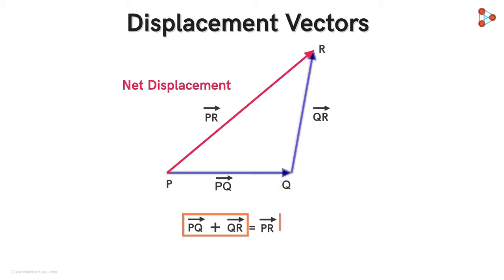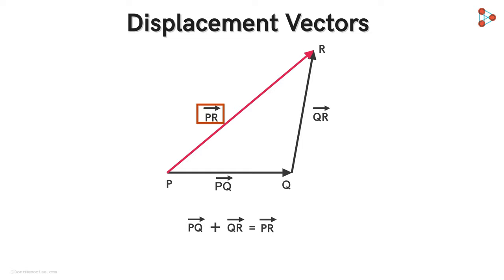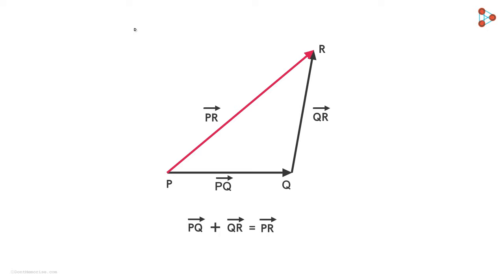Did you notice these three vectors form a triangle PQR? The two sides of the triangle, PQ and QR, represent these two vectors both in magnitude and direction, taken in the same order — that is, from P to Q and then from Q to R. Now we take the third side of the triangle. Instead of taking it in the same order from R to P, we take it in the opposite order, P to R. Then the resultant vector PR will represent the vector sum of the two vectors both in magnitude and direction.